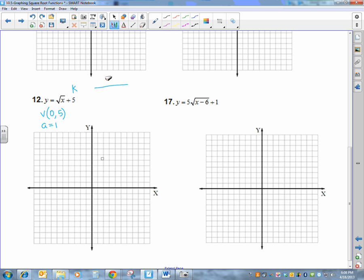So I get to use my key points without any changes: 1, 4, 9, and 1, 2, 3. So my starting point is (0, 5). That's 0, up 1, 2, 3, 4, 5. And then I go over 1, up 1. Over 4, up 2. And over 9, up 3. And again, we're going to connect them. That one looks better.